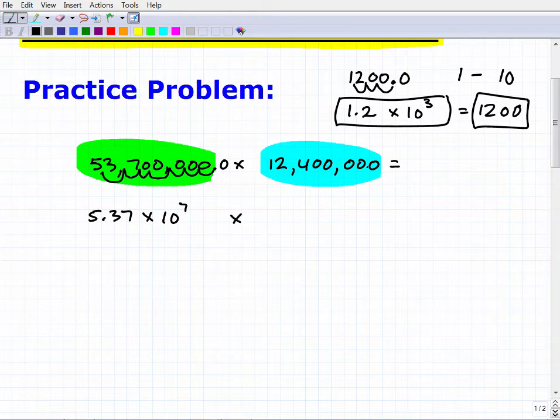So this number here in scientific notation is five point three seven times ten to the seventh. And we're going to multiply it by this number, which will be one point two four times ten to the one, two, three, four, five, six, seven. Okay. All right. So if you got this far, then that's excellent.